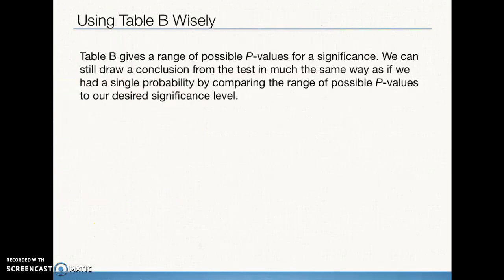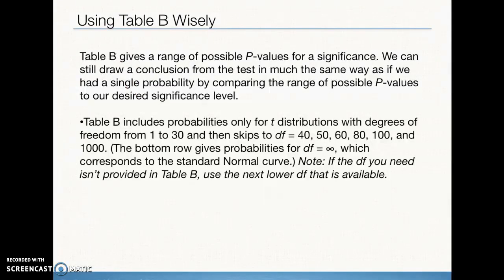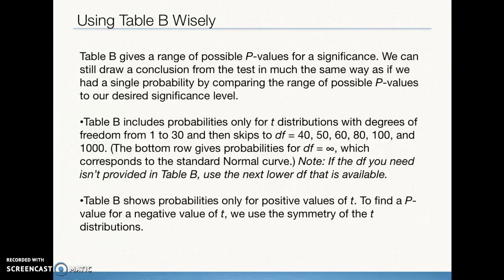If we use Table B, remember that not every degree of freedom value is listed. If our degrees of freedom are not on Table B, we use the conservative — smaller — value to calculate our test statistic. Unlike Table A, which had both negative and positive pages, Table B only has positive values. However, because of symmetry, if we get a negative T test statistic, we can use the positive value and apply symmetry to find our p-value.